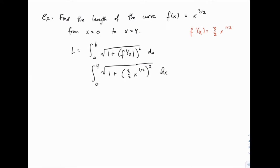Now before we can integrate, we want to simplify things a little bit. If you square 3 halves, you get 9 fourths, and if you square x to the 1 half, of course you just get x, because x to the 1 half is the same as the square root of x.